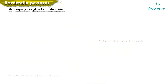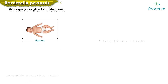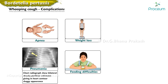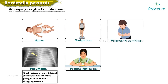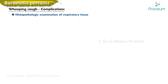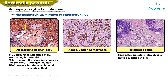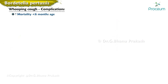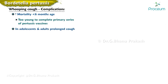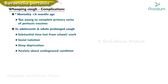The most common complications of pertussis infection include apnea, pneumonia, and weight loss secondary to feeding difficulties and post-tussive vomiting; these are more common in infants. Apnea occurs almost exclusively in infants, primarily those younger than six months. Histopathologic examination shows necrotizing bronchiolitis, intra-alveolar hemorrhage, and fibrinous edema. Most deaths occur in infants younger than six months, too young to have completed the primary vaccine series. In adolescents and adults, prolonged cough may result in time loss from school or work, social isolation, sleep deprivation, or anxiety about an undiagnosed condition.